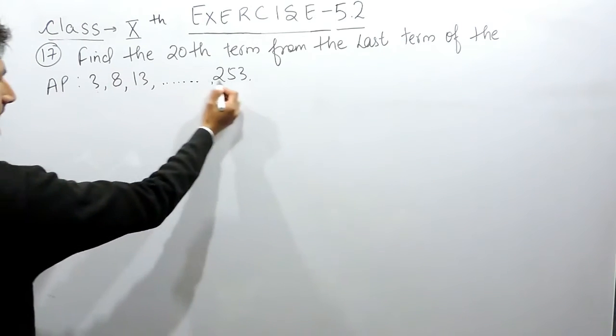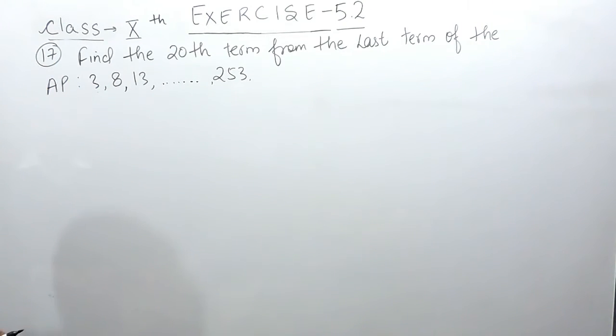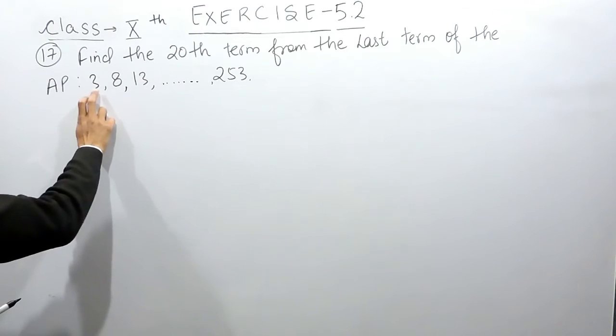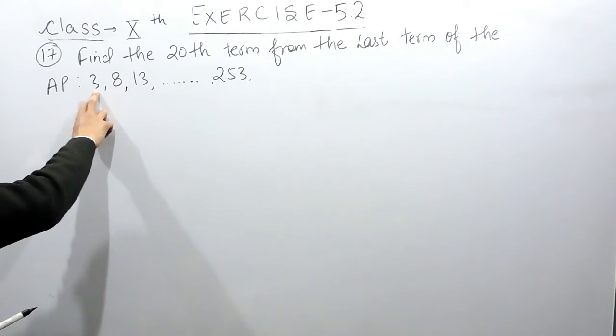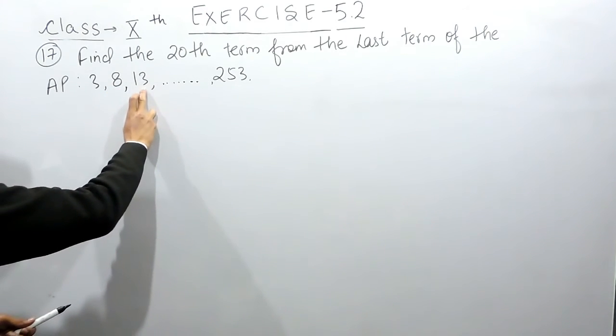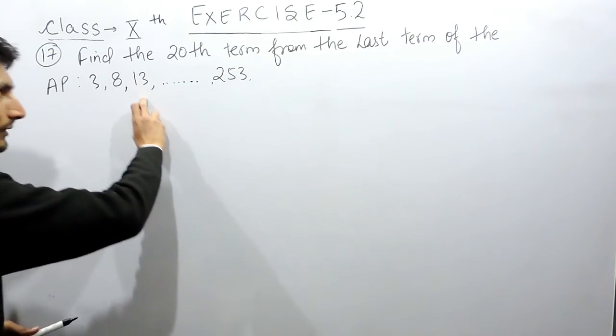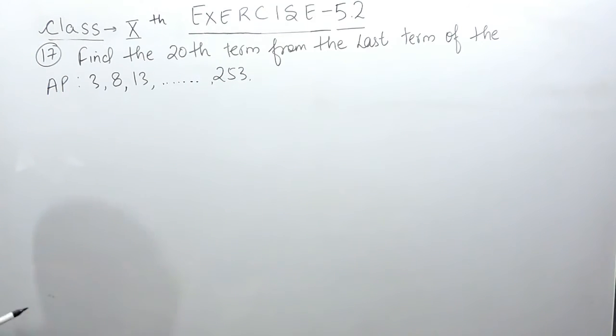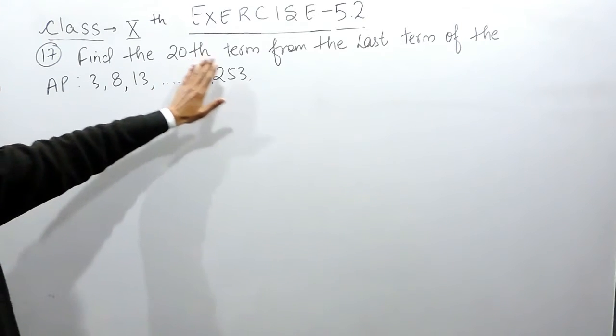So in this case, how is this AP formed? This is the first term, you have added 5 to form the second term, again the same constant is added to form the third term and so on, and the last term is 253. So you have to find the 20th term from the last.